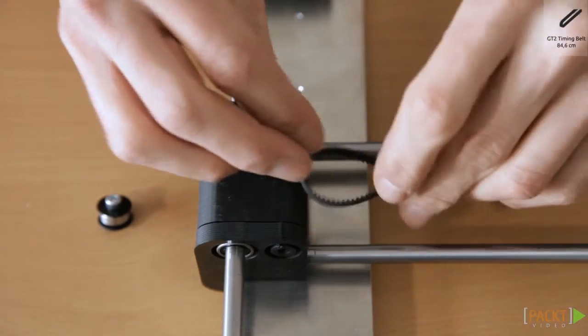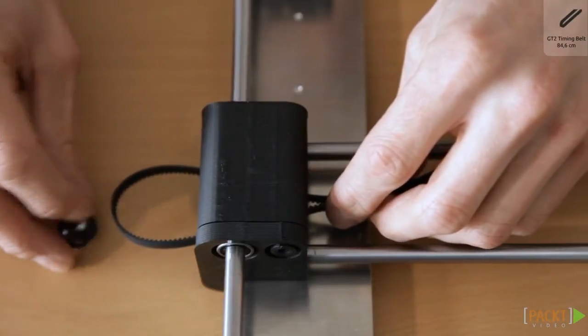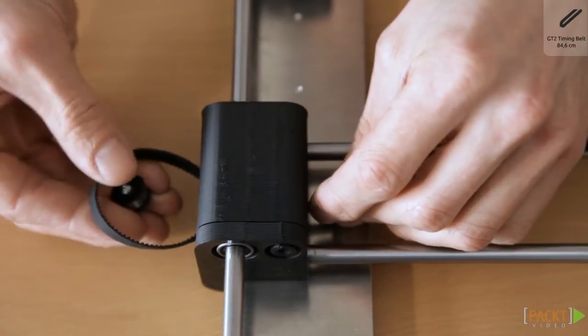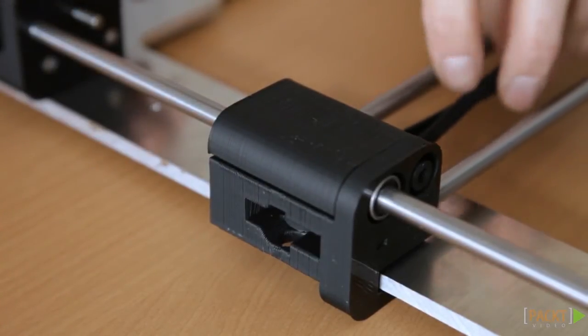Take the remaining timing belt which is 84.6cm long. Lead the timing belt through the hole on the right side of the X-bridge and put it around the idler bearing. Then slot the idler unit into the right end of the X-bridge.